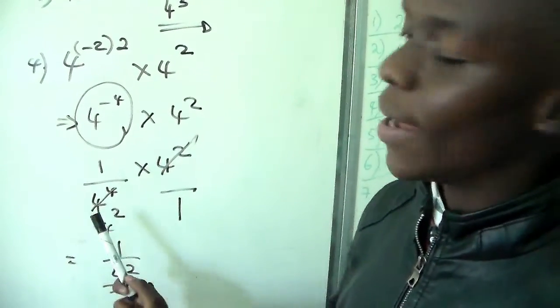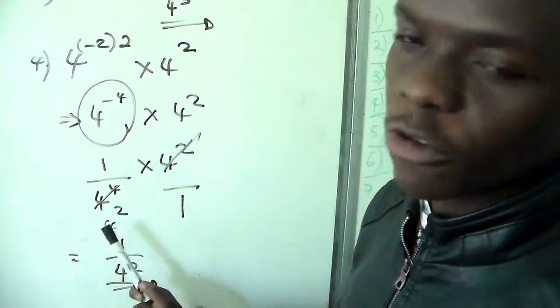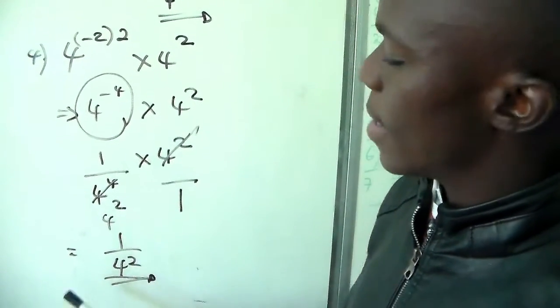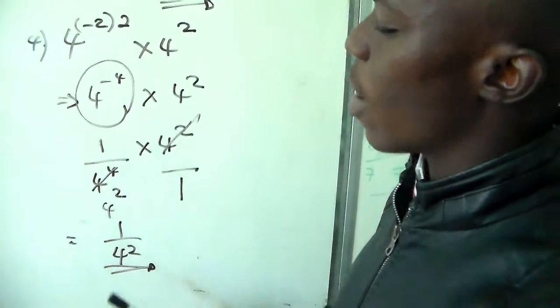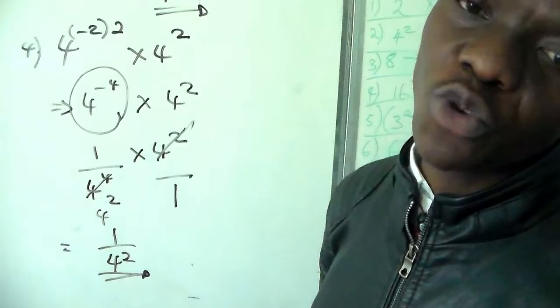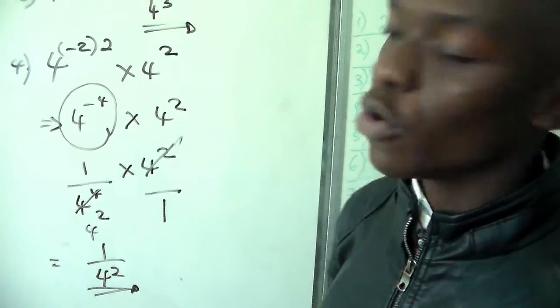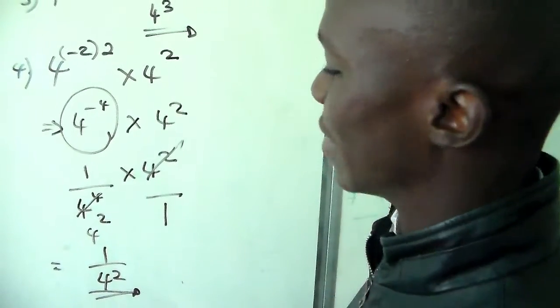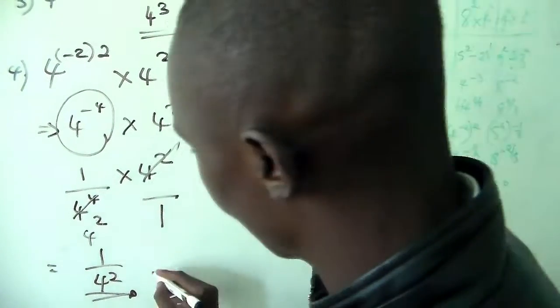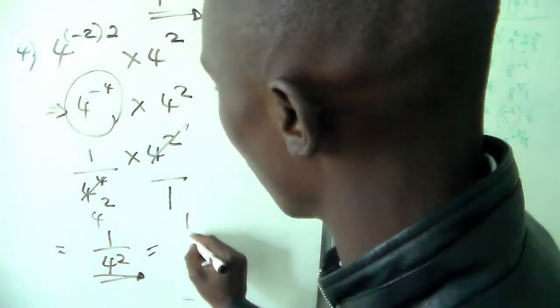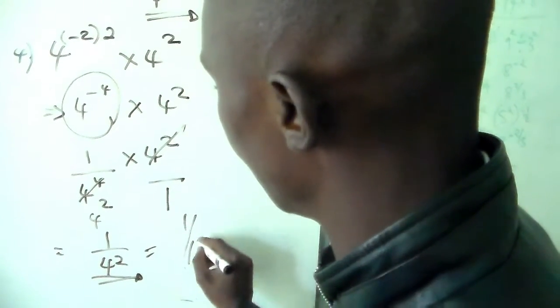These two cancel each other, remaining with four to the power of two in the denominator. We get one over four to the power of two, which is equal to one over sixteen. One over sixteen is our final answer.